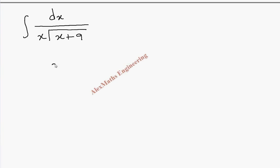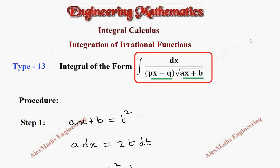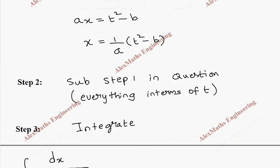The term inside the square root is taken as t square. In the general procedure, we had ax plus b, which is inside the square root, taken as t square. Now, let's continue this procedure.